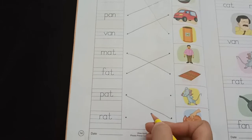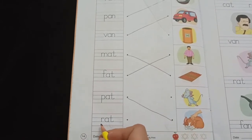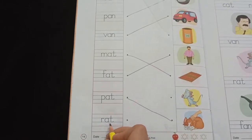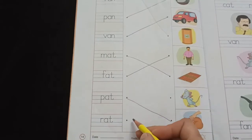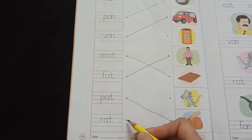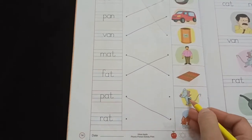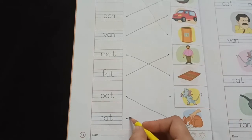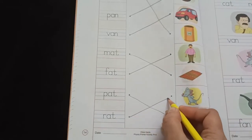Next word is, and the last word is R-A-T, Rat. And where is the picture of rat? Yes. Very good.